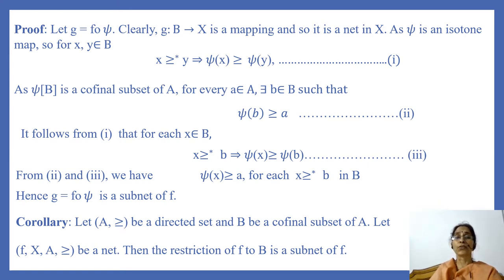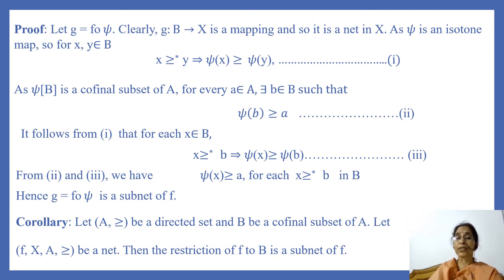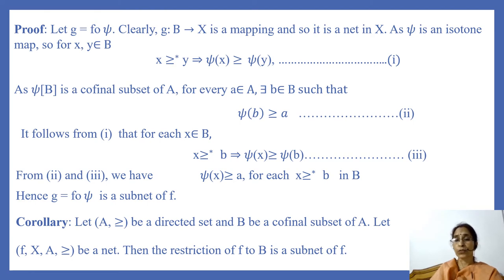As ψ is an isotone map, for x, y in B, x ≥* y implies ψ(x) ≥ ψ(y). And since it is given that ψ(B) is a cofinal subset of A, for every a in A there exists b in B such that ψ(b) ≥ a.